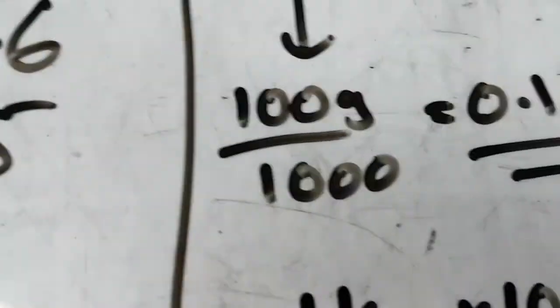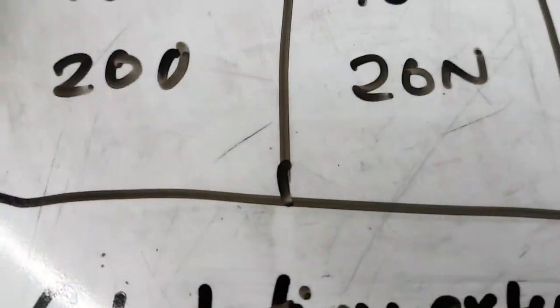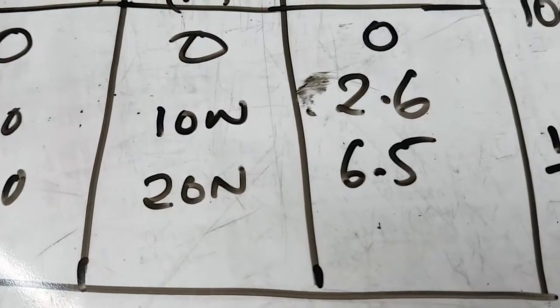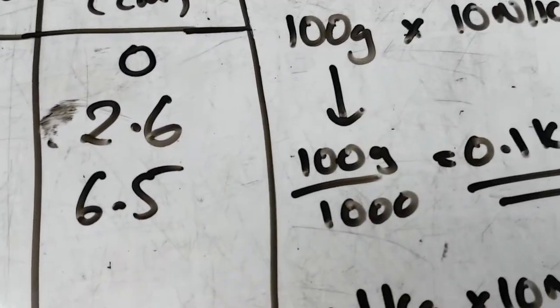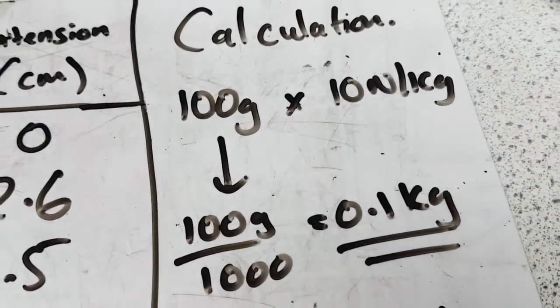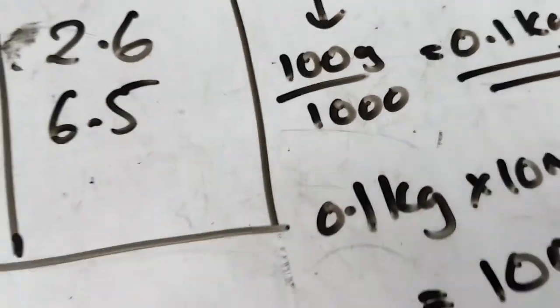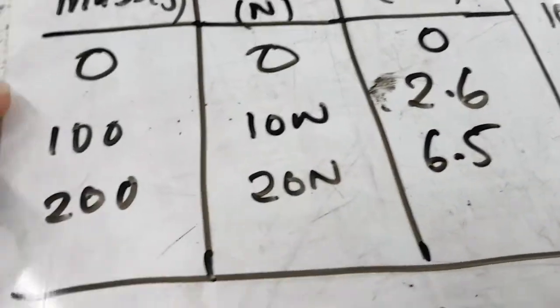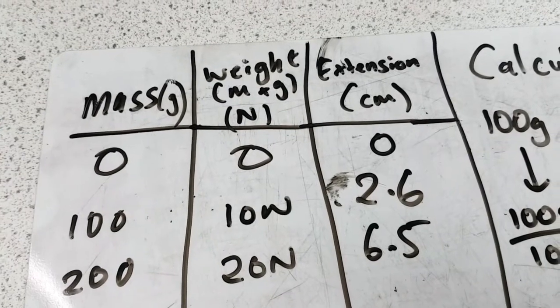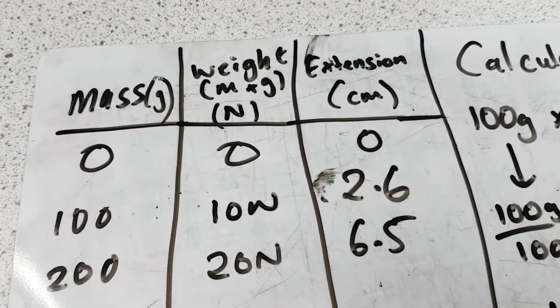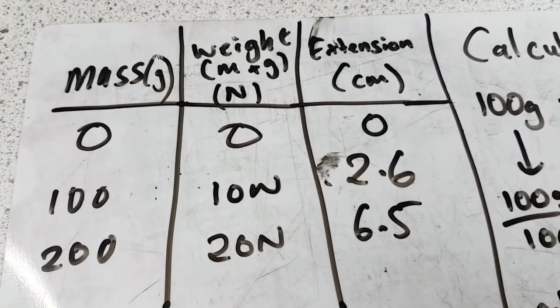The next 200, if you do the same calculation, you'll find out that 200 grams is the same as 20 newtons. You can only guess what 300 grams is equal to. That's right, 30 newtons. So what I've done is I placed zero mass on it first. There was zero weight and the extension was zero. It didn't move anywhere.